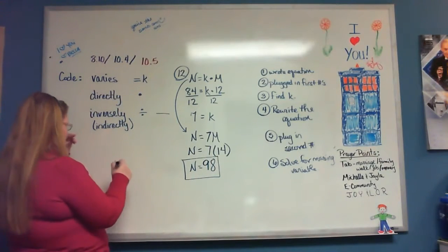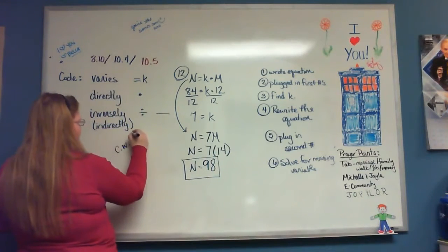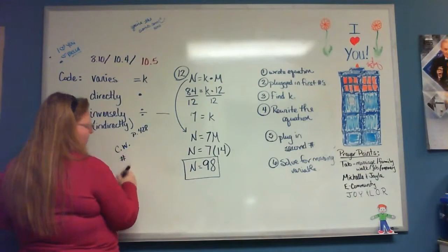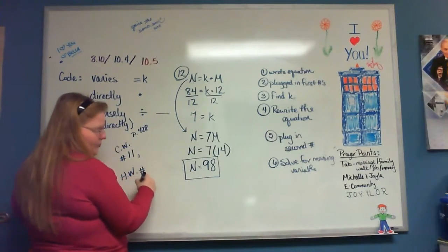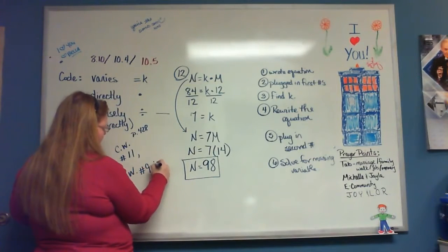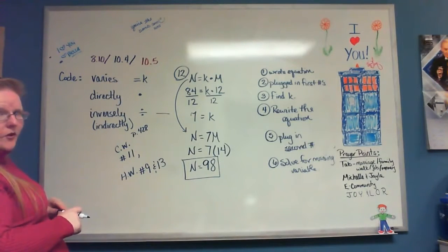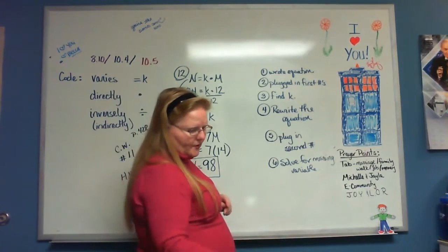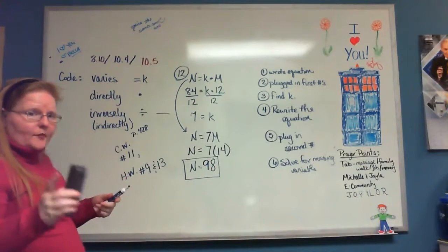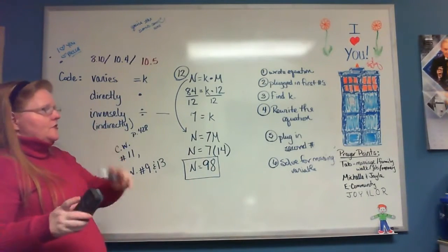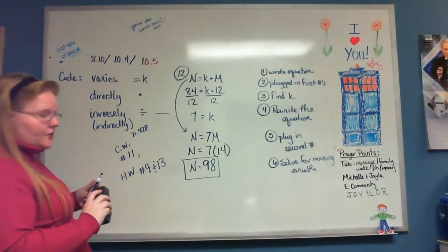For this section, classwork is on page 428 — do number 11 for classwork, and for homework do numbers 9 and 13. One more section — don't worry, you already have the notes for this section. Your book separated 'inversely' and 'directly' into two different sections, but we've already done everything, so I'm only going to go over two problems, one of which you'll do yourself.